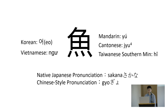In Mandarin Chinese, we say 'yu.' In Cantonese, I'm not sure — maybe 'yu.' In Taiwanese Southern Min, we call it 'he.' In Korean, it's 'o.' In Vietnamese, it's 'ng.' So the pronunciations are totally different, but we still write the same character.